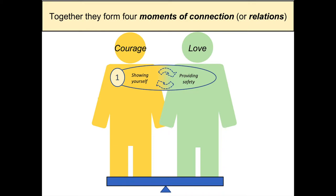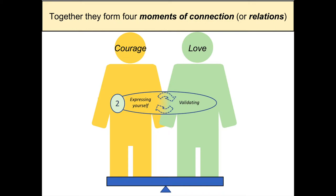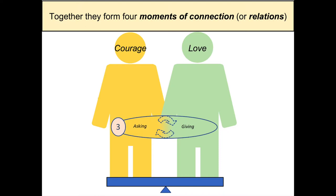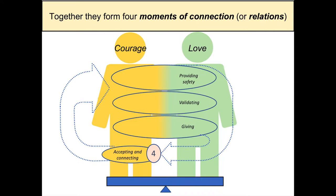The first relation — and the most important one — is when the courageous person engages in showing yourself and the person on the love side provides safety. The second moment of connection is when the courageous person engages in expressing yourself and the person on the love side responds with validation. The third moment of connection is when the courageous person asks for something and the person on the love side gives the person what they asked for.